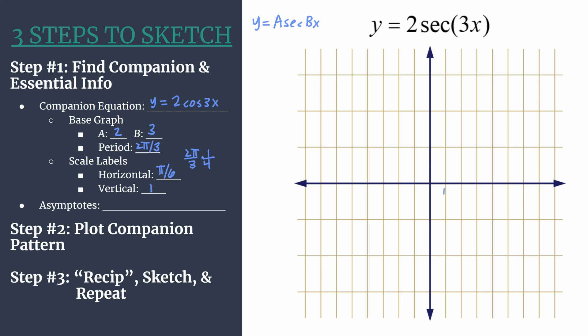Starting with the horizontal, we'll label counting by π over 6: 2π over 6 reduces to π over 3, 3π over 6 reduces to π over 2, and 4π over 6 reduces to 2π over 3. This fourth tick mark should always match your period. Now let's keep counting: 5π over 6, 6π over 6 reduces to π, 7π over 6, and 8π over 6 reduces to 4π over 3. Go ahead and hit pause; I'm going to get the negative side labeled.